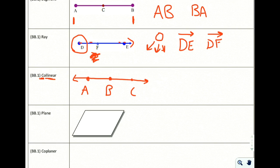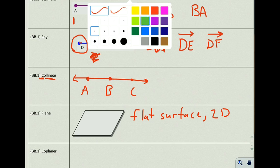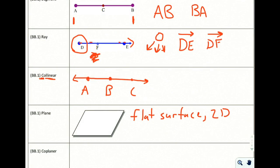Next one is a plane. A plane is a flat surface. So you might even want to just list that out here: flat surface. You might want to also say two-dimensional, 2D surface, like a table top or a floor or a wall.